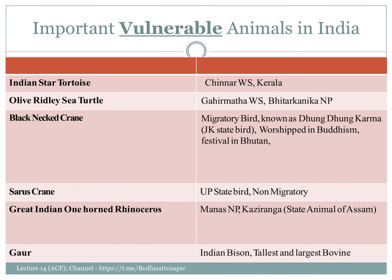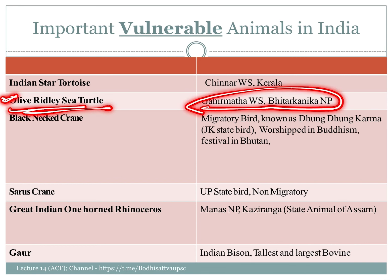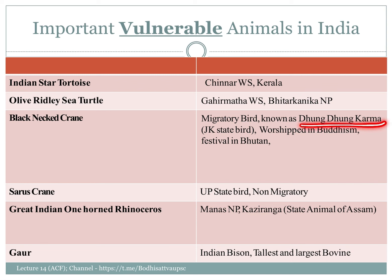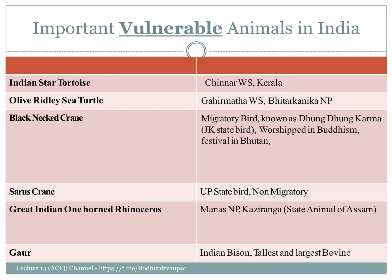Some vulnerable animals in India include the Indian star tortoise and olive ridley turtles. The black-necked crane is a migratory species found in Jammu Kashmir and Bhutan. It is also found in Puja. The Indian one-horned rhino is in the vulnerable category, found in Assam and Uttar Pradesh.